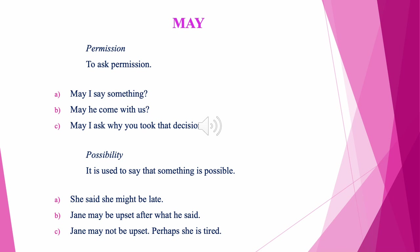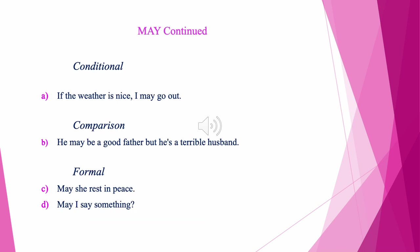May. You use the verb may to ask permission: May I say something? May he come with us? May I ask why you took that decision? Possibility — it is used to say something is possible: Jane may be upset after what he said. Jane may not be upset, perhaps she's tired. May as conditional: If the weather is nice, I may go out. Comparison: He may be a good father, but he's a terrible husband. Formal: May she rest in peace.